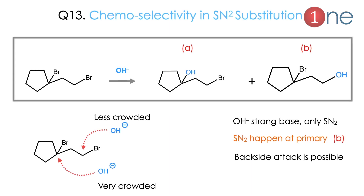Next: chemoselectivity in SN2 reaction. Consider a molecule with two bromines — where will the SN2 reaction happen? Both bromines could be replaced by OH, giving possibilities A and B. SN2 happens through backside attack, so there must be space for backside approach. Compared to bromine in the ring position versus the free bromine, the free bromine is favorable because of its less crowded architecture. Less crowded position promotes the reaction.